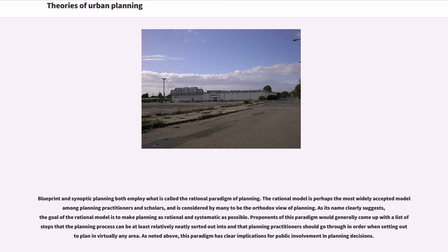Blueprint and synoptic planning both employ what is called the rational paradigm of planning. The rational model is perhaps the most widely accepted model among planning practitioners and scholars, and is considered by many to be the orthodox view of planning. The goal of the rational model is to make planning as rational and systematic as possible. Proponents of this paradigm would generally come up with a list of steps that the planning process can be sorted into and that planning practitioners should follow when setting out a plan in virtually any area.